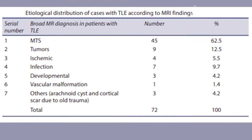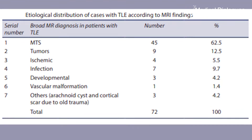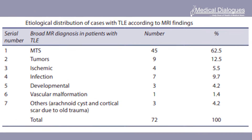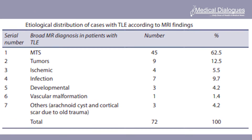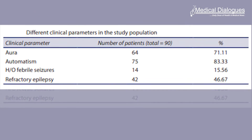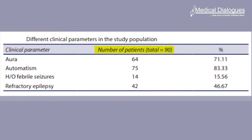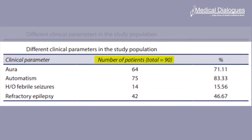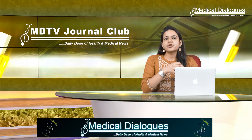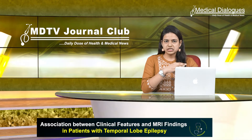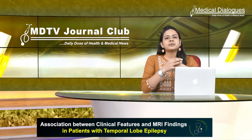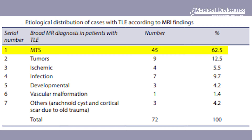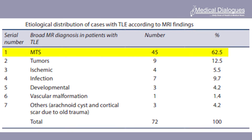This was a study in which consecutive patients presenting with clinical features diagnostic of temporal lobe epilepsy underwent a brain MRI. A total of close to 90 patients were included, with the mean age of the study population being around 29 years. Females comprised about 45% of the total sample, and mesial temporal sclerosis was the most common imaging finding, seen in about 60% of the patients.